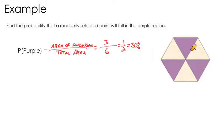It's common sense — if you randomly pick a spot, half of the triangles are purple, so there's a 50% chance you'll land in a purple triangle.